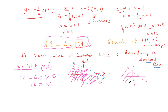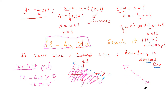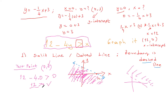So that's the graph — finished. Now, if (0, 0) had NOT satisfied the inequality, I would clean that region and shade the other half-plane instead. But since it is satisfied, this shaded region is the solution.